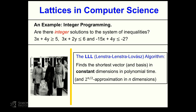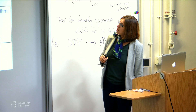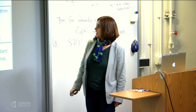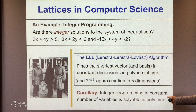Indeed, this is probably one of the most famous algorithms when I was a graduate student — or maybe I was already an assistant professor. The Lenstra-Lenstra-Lovász algorithm, the LLL algorithm, finds the shortest vector in constant dimensions in polynomial time, and achieves a 2^(n/2) approximation in n dimensions. So this is polynomial time — that's the good news — but it's only an approximation, and a pretty bad one unless you restrict the dimensions. The corollary for integer programming is that it is solvable in polynomial time for a constant number of variables.